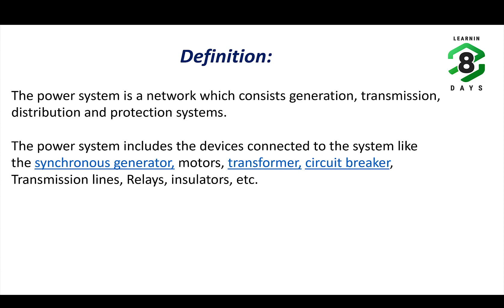Its major objective is to generate, transmit, and distribute electrical energy. The power system contains many components like generators, transformers, circuit breakers, transmission lines, synchronous motors, induction motors, relays, insulators, and compensators. The system contains a large set of components which are interconnected to achieve the objective of efficient energy transmission to customers.